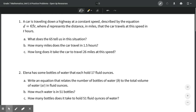Okay, so first we're going to take a look at number one, and it says a car is traveling down a highway at a constant speed described by the equation d equals 65t, where d represents the distance in miles that the car travels at this speed in t number of hours.